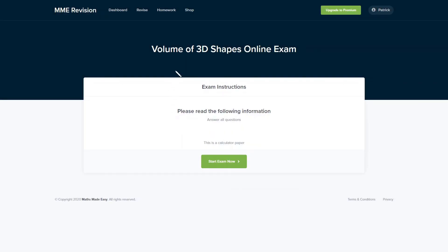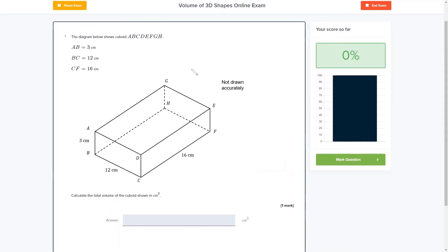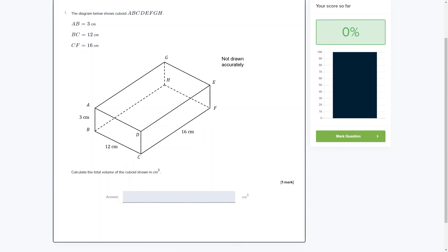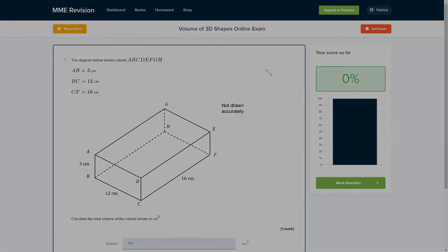So if you'd like to improve at this topic or just practice some exam style questions, we do have an online exam available on the volumes of 3D shapes. You can find it through our revision platform. If you click the link, it'll take you straight there. You'll find a variety of different question types. Some will be multiple choice, some you can just type an answer in. There's plenty of questions to have a go at and you'll get instant feedback on all of them, so it's really useful if you want to keep track of the areas that you need to improve at.